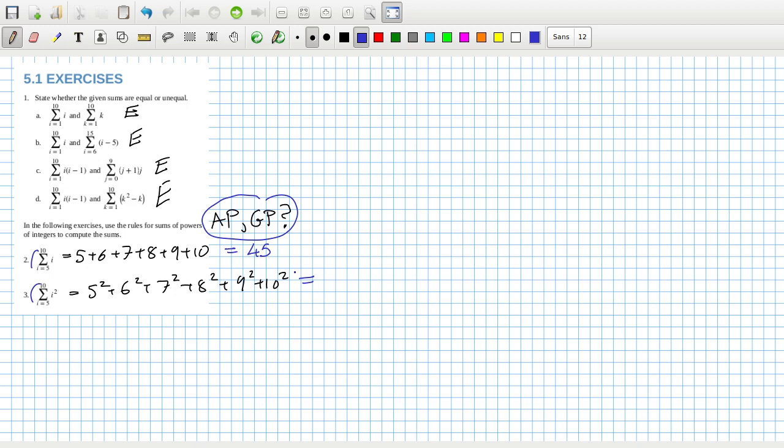And five squared plus six squared plus seven squared plus eight squared plus nine squared plus ten squared. That's three five five.